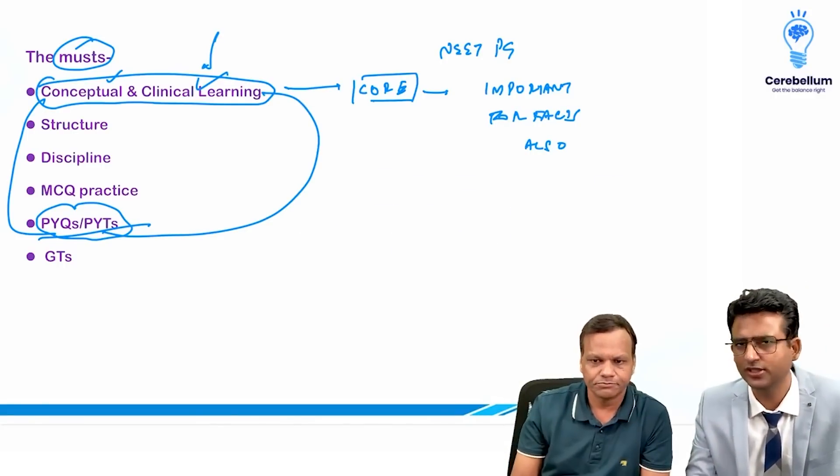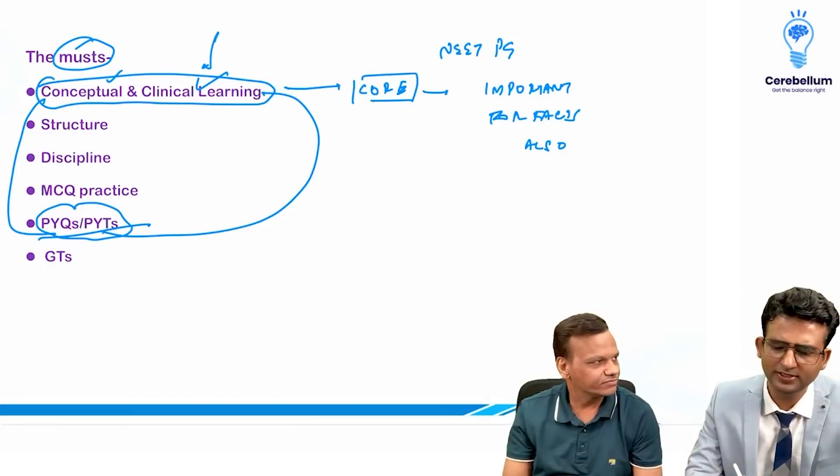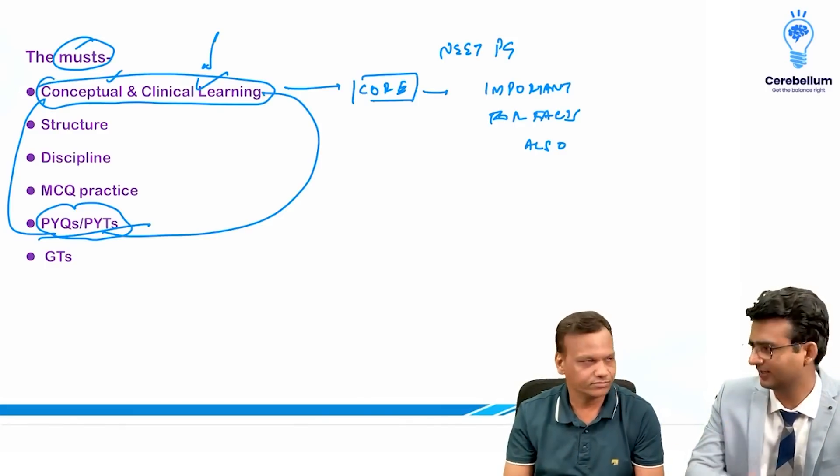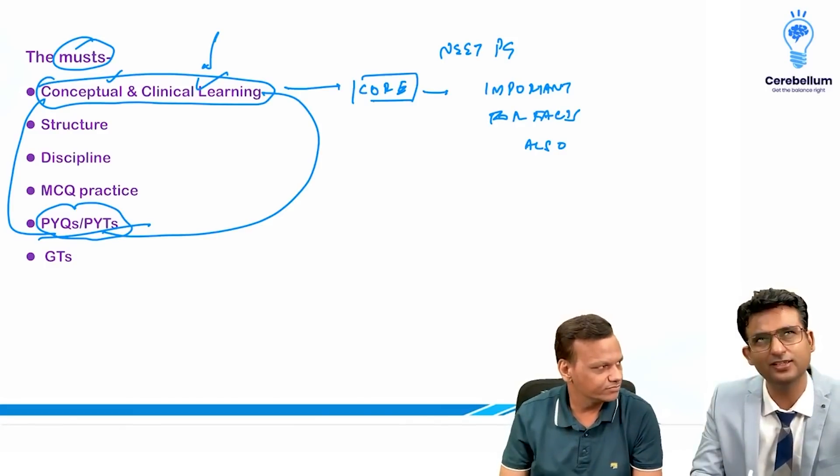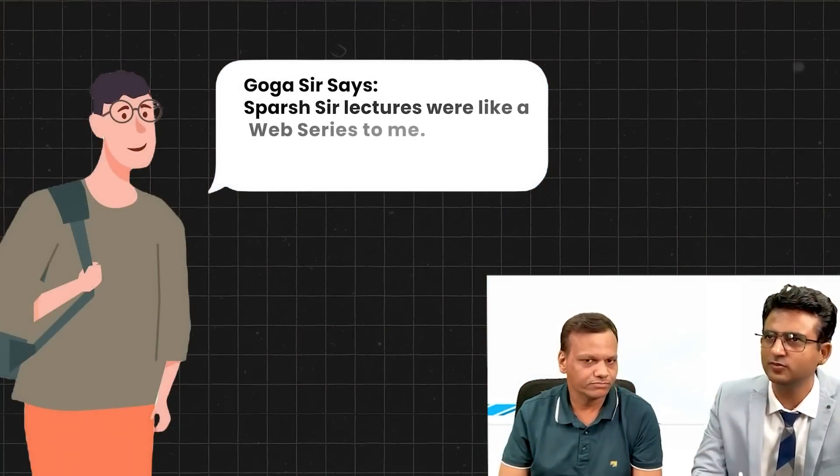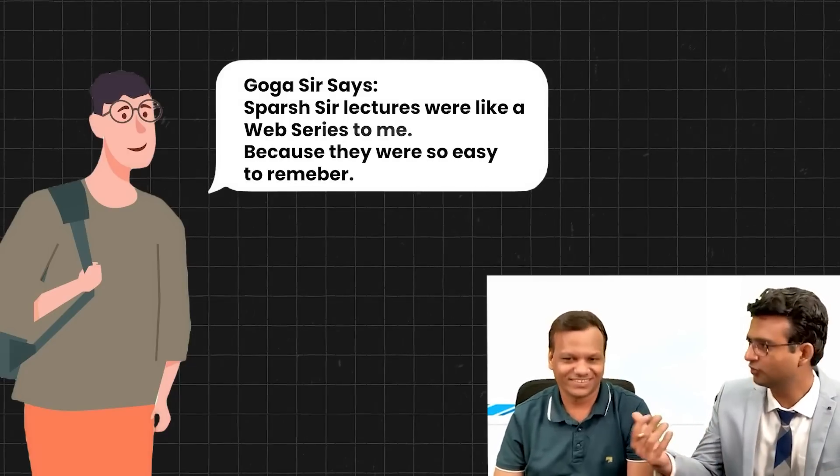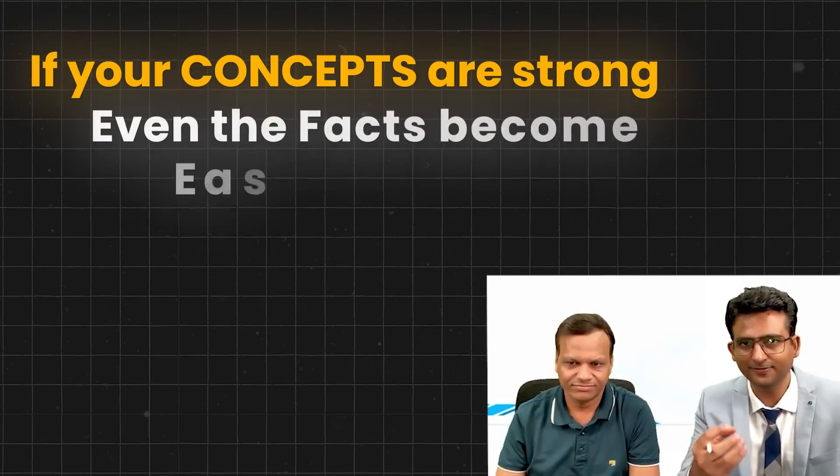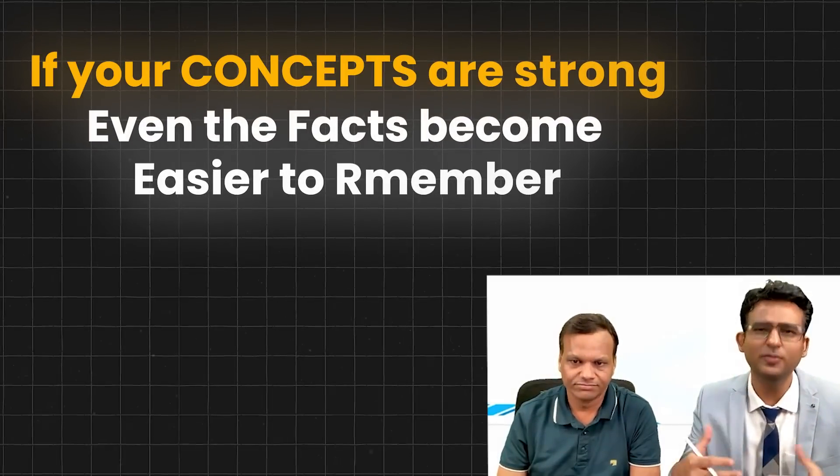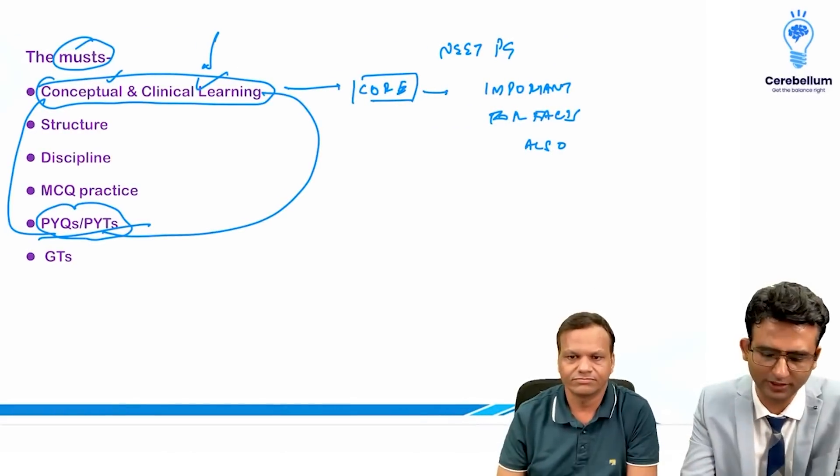In fact yesterday I was doing an interview and the student told me that he was following you and Spurs from second year. He made a very interesting statement. I think it was Keshav or someone. He said that Goga sir's and Spurs sir's lectures were like a web series too, because they were so easy to remember. That is what you are talking about - that if your concepts are strong, even the facts become easier to remember. Otherwise how many facts can you remember right.